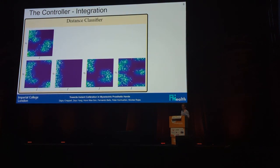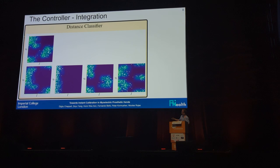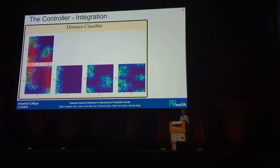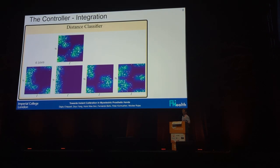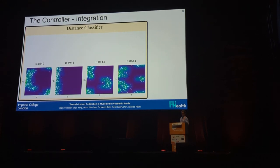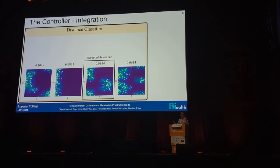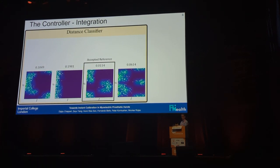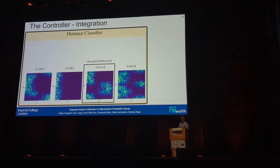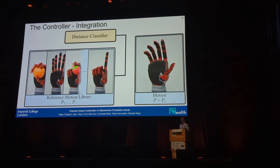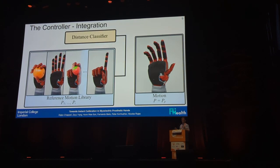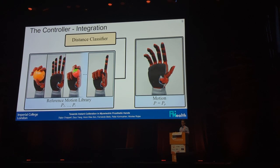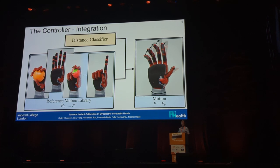The way we integrate this into a prosthetic hand controller is: we have our live EMG distribution, we have a series of references, we compute the distance, repeat that for all of them, then select the one that's closest and falls below our threshold — basically saying your EMG is close enough to this reference, so you must be wanting to do that motion. Whatever reference muscle activity you recorded corresponds to a reference motion, and we select that as what we want to do.